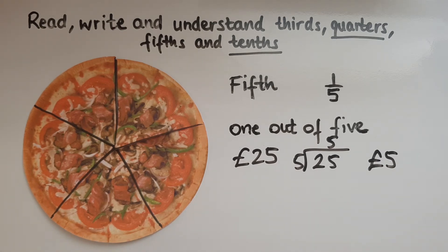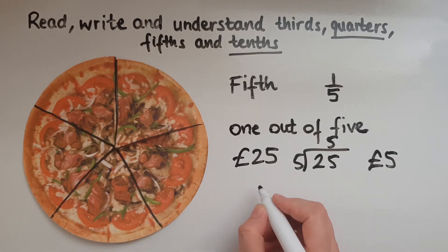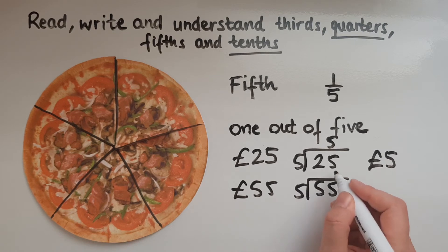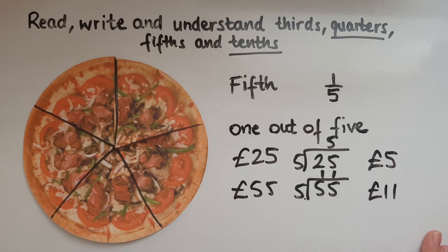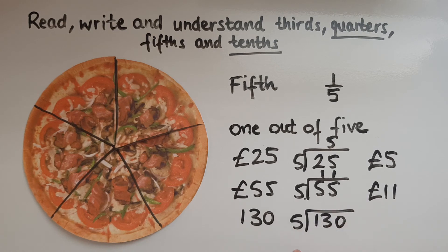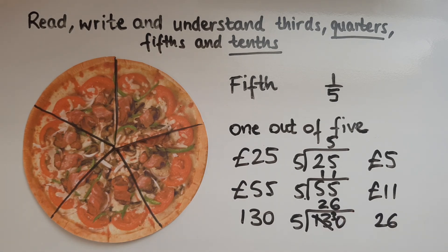What would be one fifth of 55? Shared equally by five — five into five is one, five into five is one — so that would be £11. Now let's find one fifth of 130 — 130 metres, litres, kilometres, whatever it might be. Finding one fifth: 130 divided by five. Five into 13 fits twice with three remaining. Five into 30 fits six times. So 26 is one fifth of 130. To find a fifth, you share that number into five — divide by five.